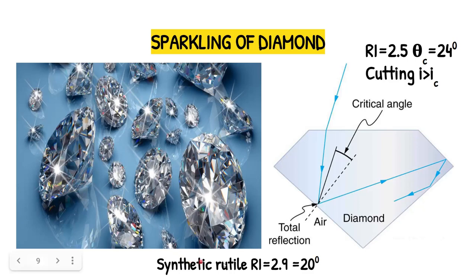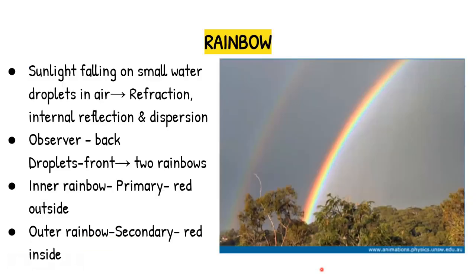If a diamond is not well cut, it will not sparkle much because the ray of light would be refracted instead of undergoing total internal reflection. There is another substance called synthetic rutile, which has a refractive index of 2.9 and a critical angle of 20 degrees, making it one of the most brilliantly sparkling substances known.